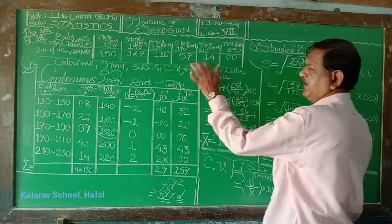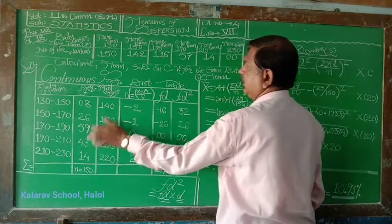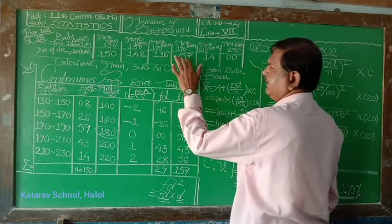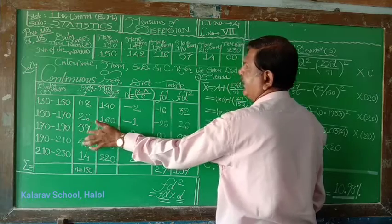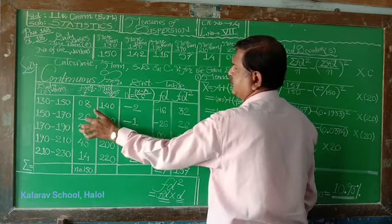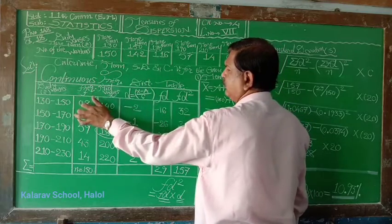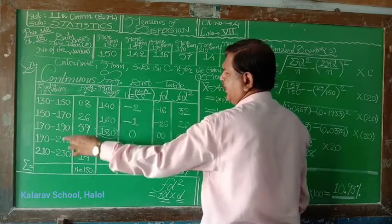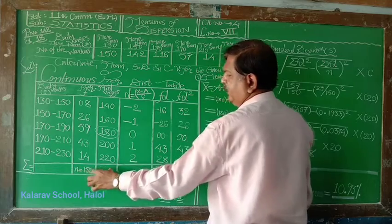57 minus 14, 43. 116 minus 57, 59. 142 minus 116, 26. 150 minus 142, 8. And if we make the total, frequency total, then 150.